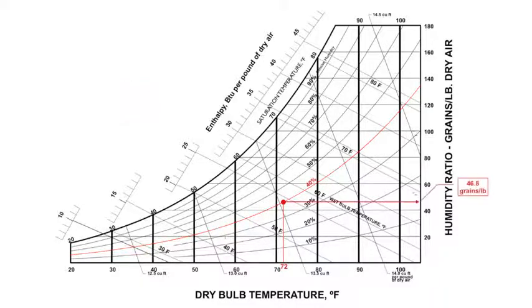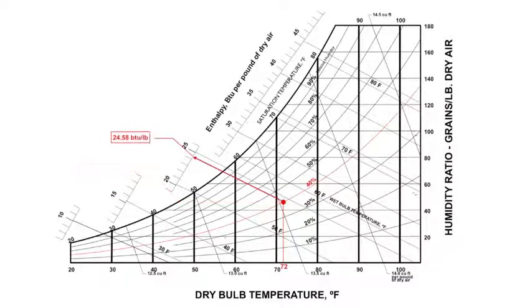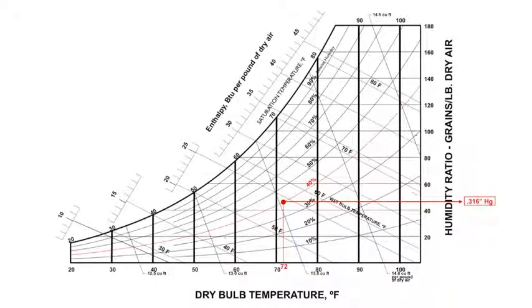If we read to the right we can see that the humidity ratio is 46.8 grains per pound. If we read to the left we can see that the dew point is 46.4 degrees. The enthalpy is 24.58 BTUs per pound. The specific volume is a little over 13.5, and the vapor pressure is 0.316 inches of mercury.